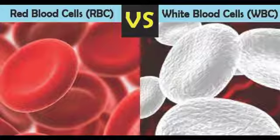Iron deficiency causes anemia. Decreased hemoglobin levels lead to anemia, while an increase in RBC count is called polycythemia.